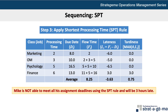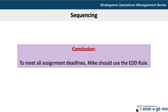This means that if Mike scheduled his assignments in order of completion time from shortest to longest, he would not be able to meet the deadlines and would be 3 hours late with his finance assignment. Our conclusion then is that in order to meet all assignment deadlines, Mike should use the earliest due date, or EDD, rule.